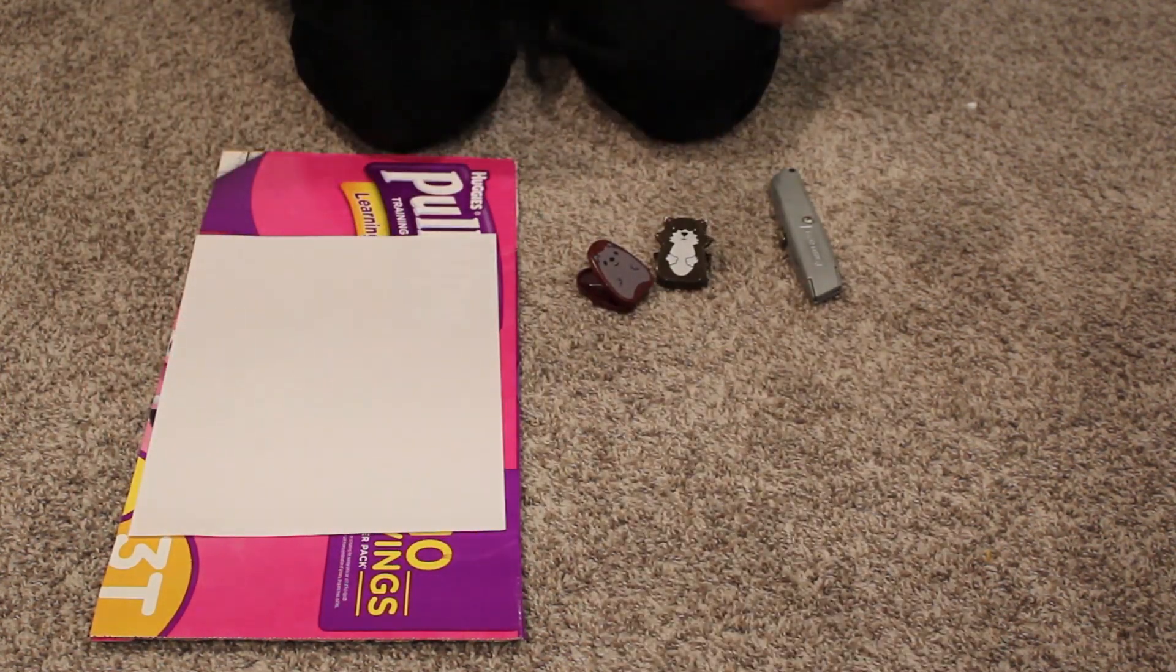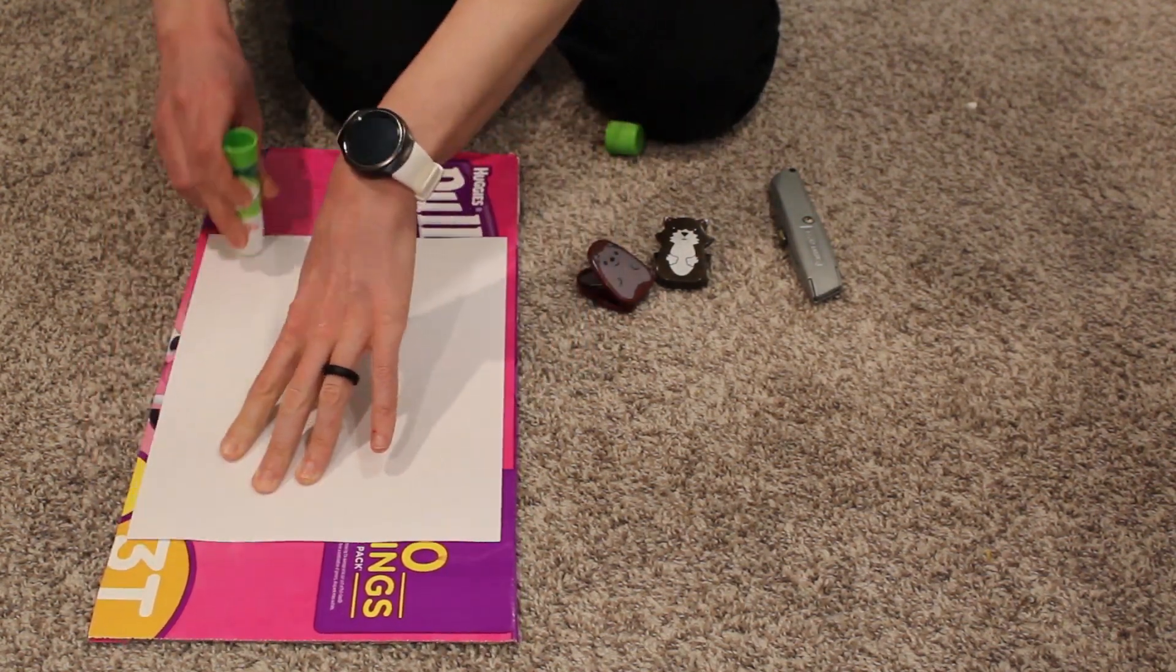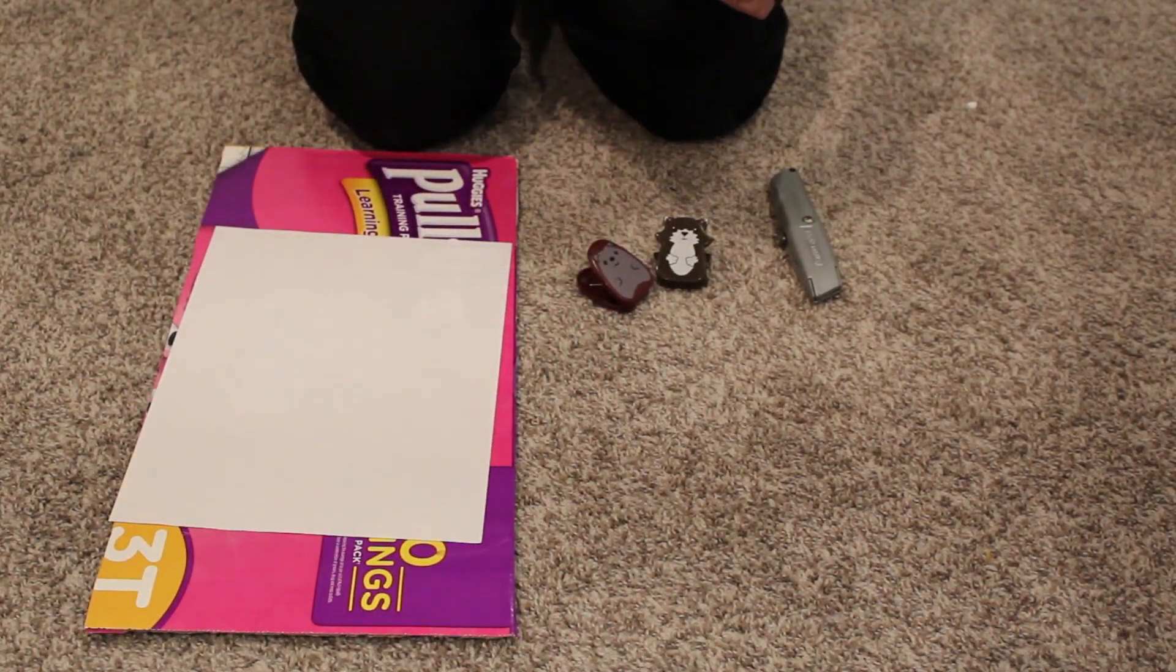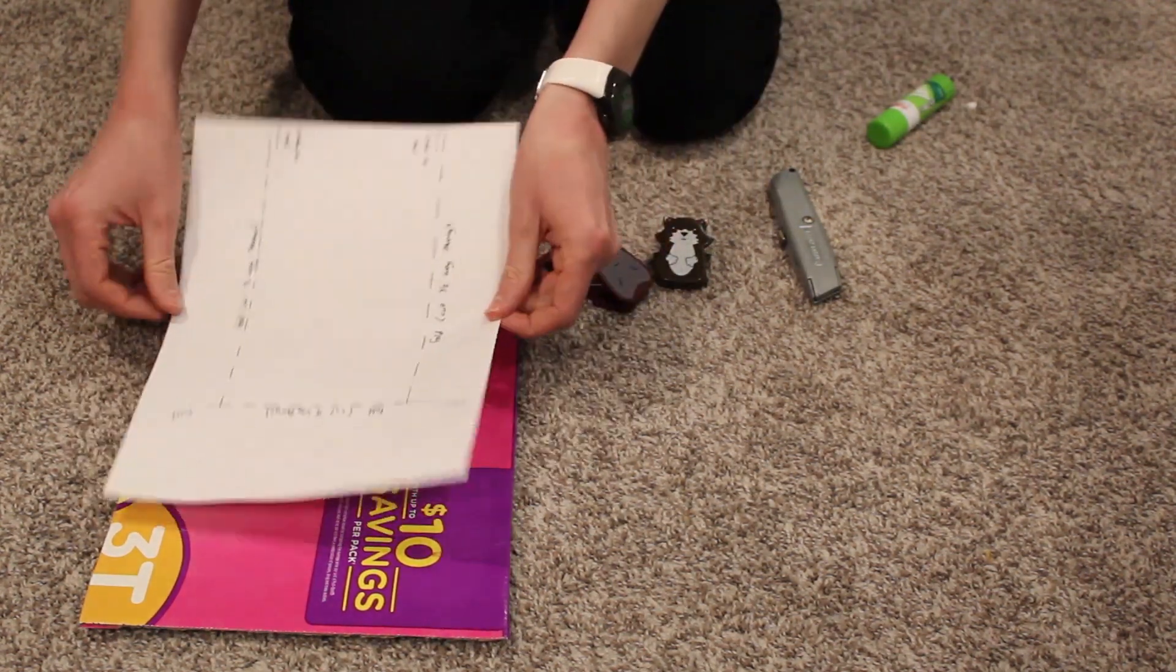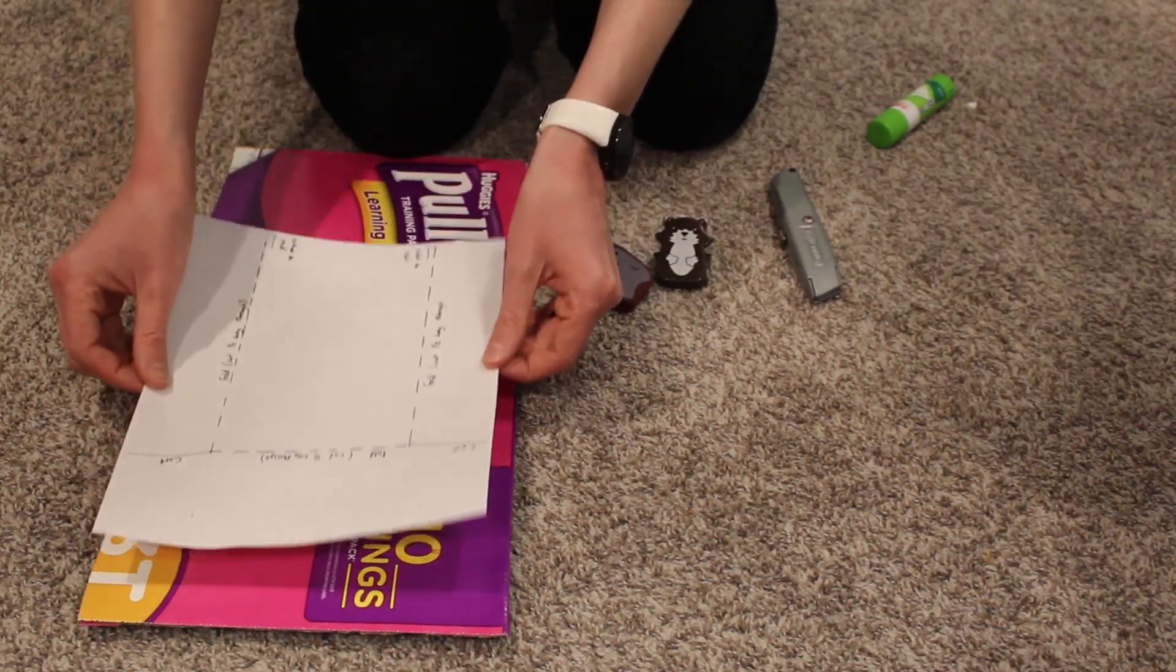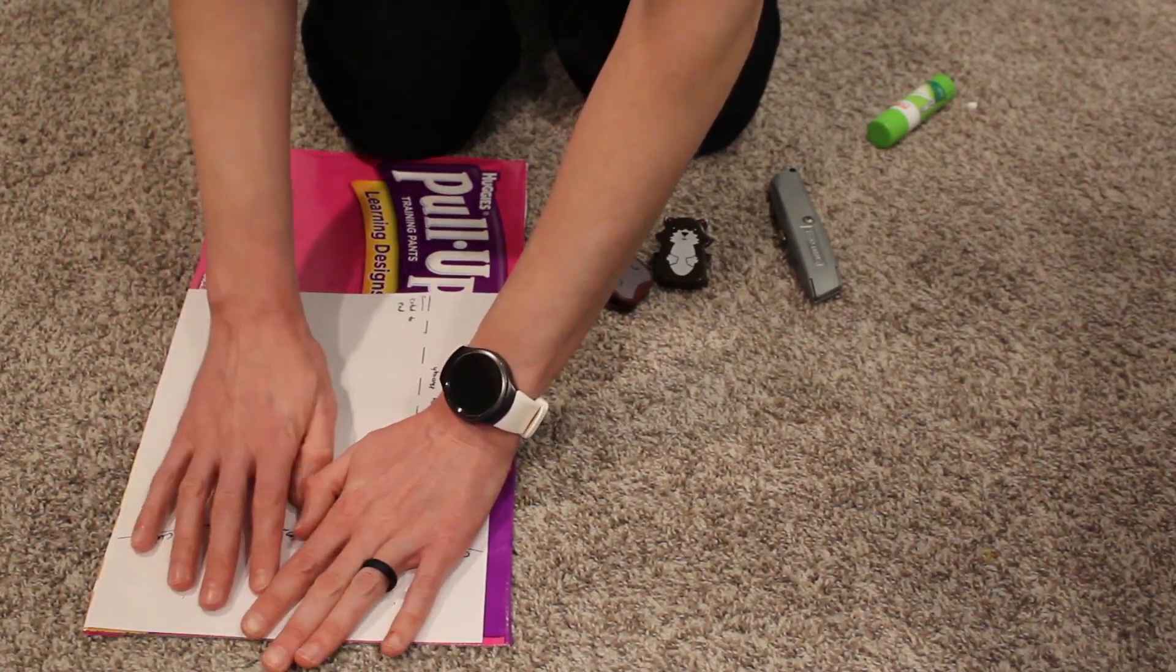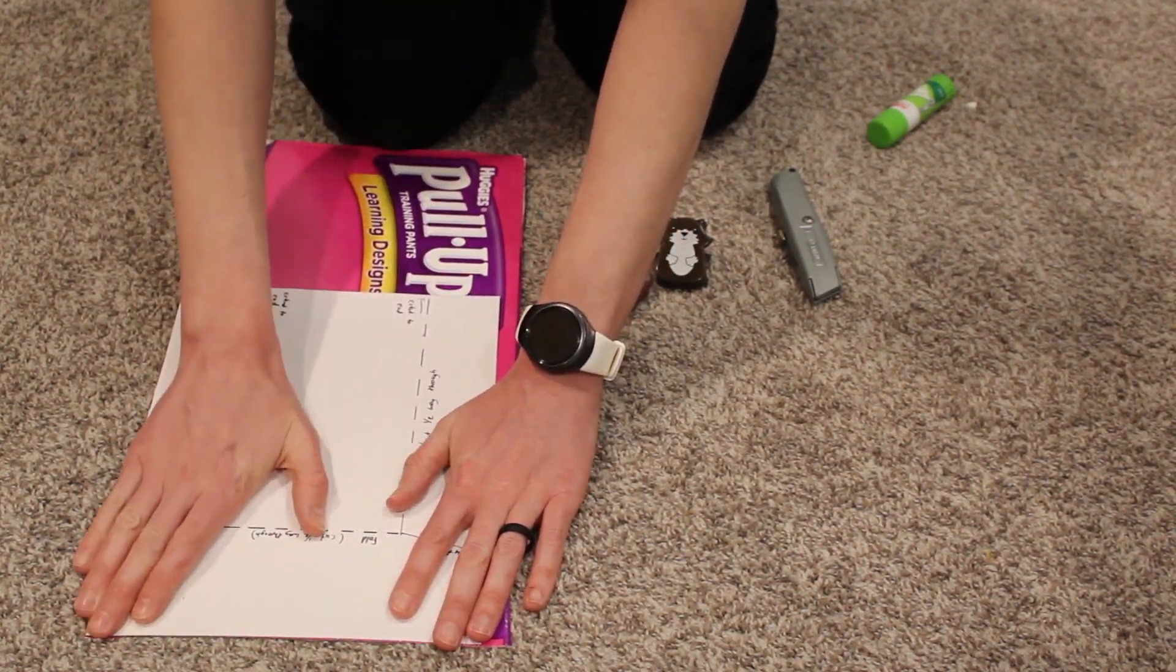All right, so first step: we're going to glue the template onto our cardboard just to make sure it stays in place as we're trying to cut this out. There we go. And I'm going to align—there's a narrower part here and a wider part—I'm going to align the narrower part with one end and try to get it on the edge as well.